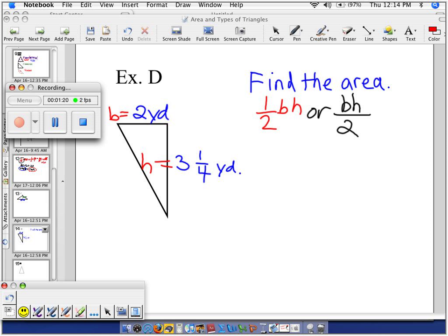Dividing by two is tougher than multiplying by half, so that's why I'd rather choose the red formula. So away I go. Here I'm going to plug it in. What is B? B is 2 yards. And the height is 3¼.